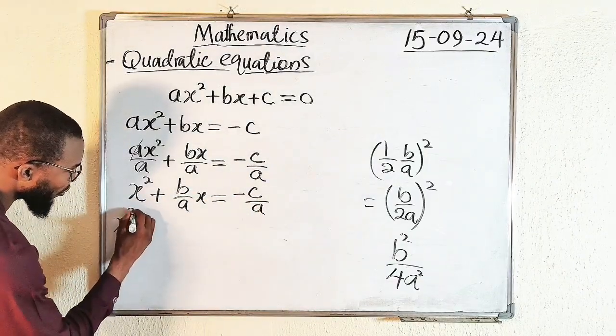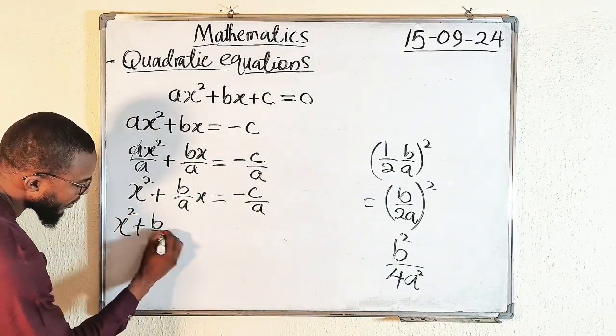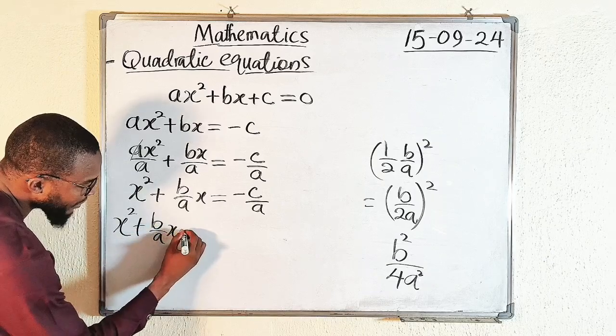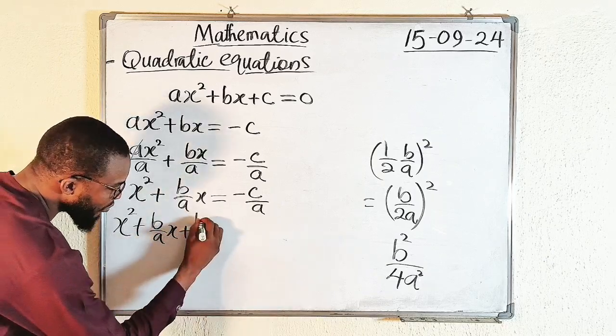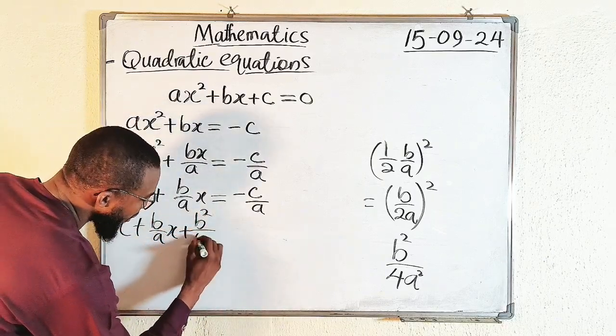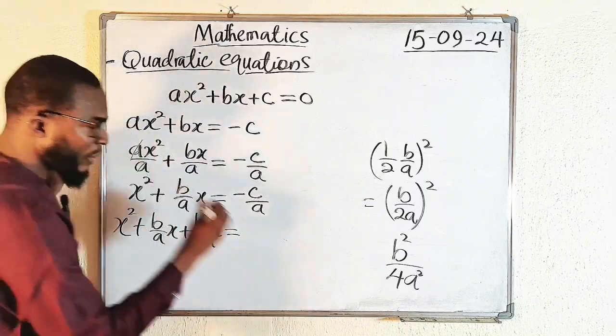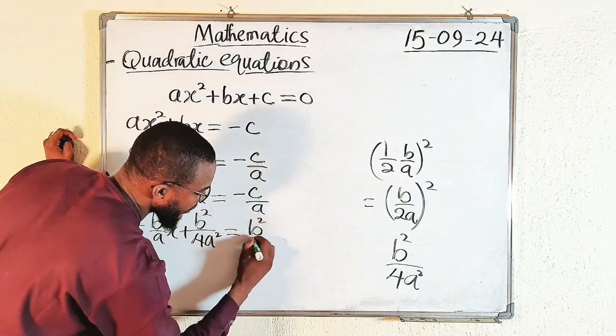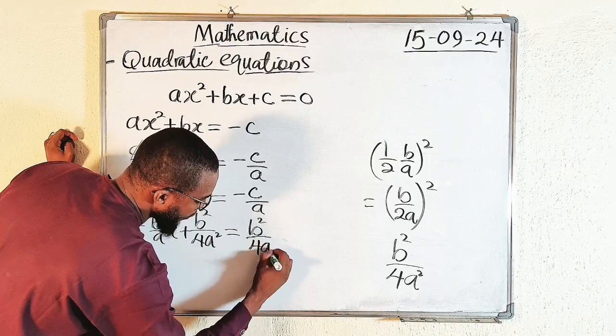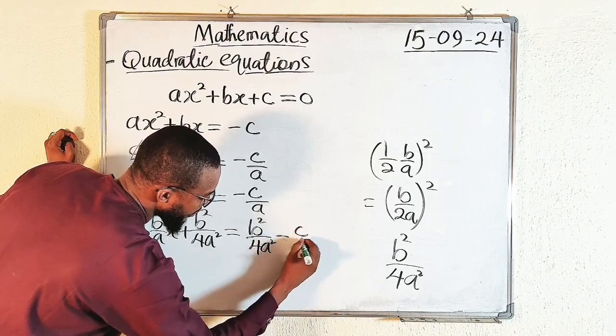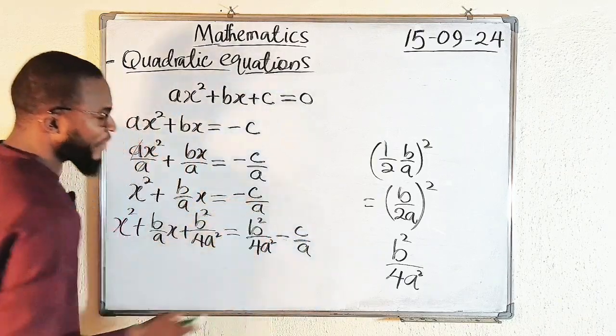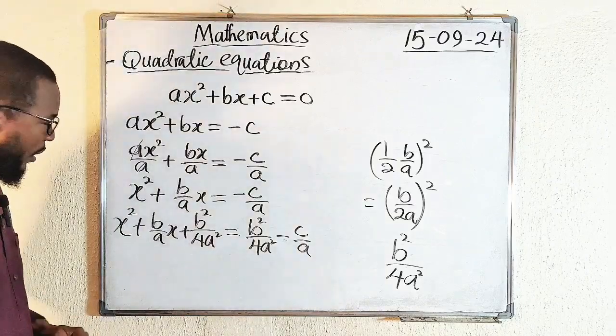So we have x² + (b/a)x, then you add that term which is b²/4a². Do the same thing, we are going to add it here: b²/4a² - c/a. This c/a is negative, remember.